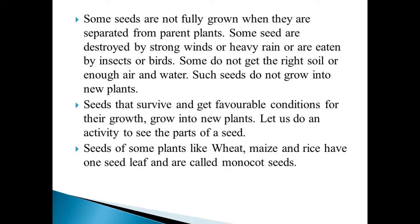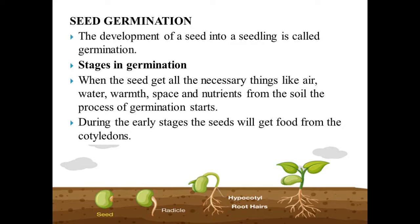Let us do an activity to see the parts of a seed. Seeds of some plants like wheat, maize, and rice have one seed leaf and are called monocot seeds.